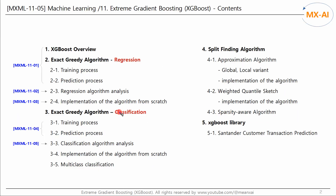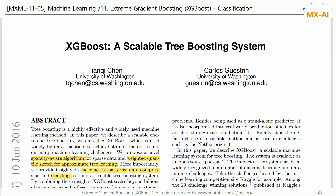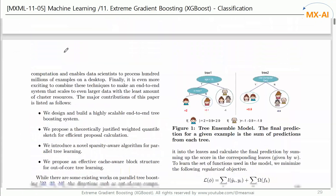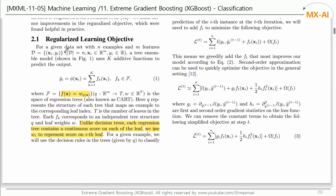In the last video, we looked at the training process and the prediction process for XGBoost classification through a simple example. In this video, we will derive the formulas used in these processes and analyze in detail the algorithm presented in the paper. Section 2.1 of this paper sets a regularized learning objective function and optimizes it to create the formulas that calculate the score, gain, and the output value used in the previous video.